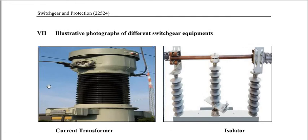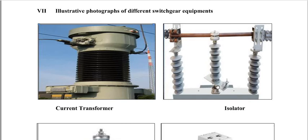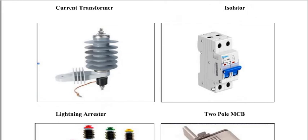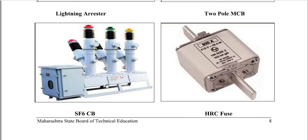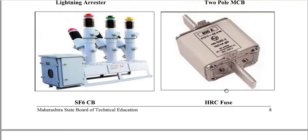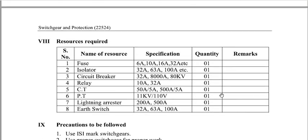Some photographs of different switch gear equipment are shown here. These include a current transformer at a substation, isolators of different types and subtypes, lightning arrestors, 2-pole MCBs, and an SF6 circuit breaker which uses sulfur hexafluoride gas for arc-quenching purposes. Also shown are HRC fuses. These are some pictorial views of protective switch gear.